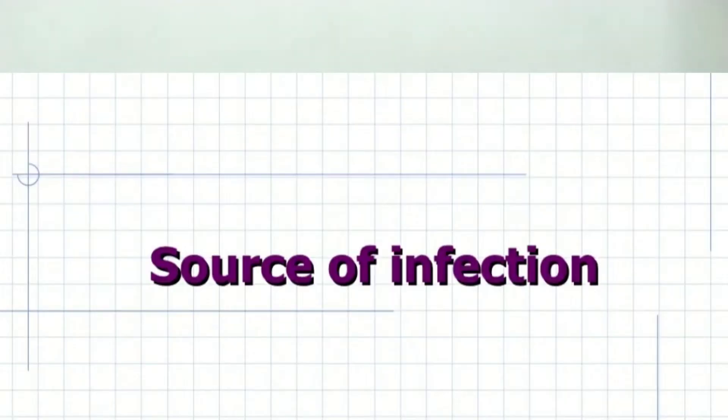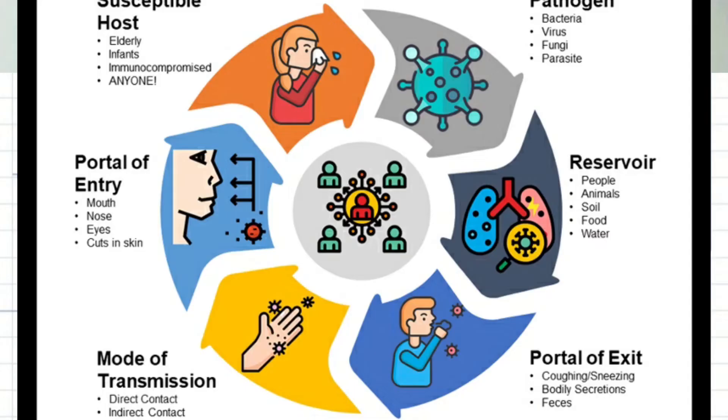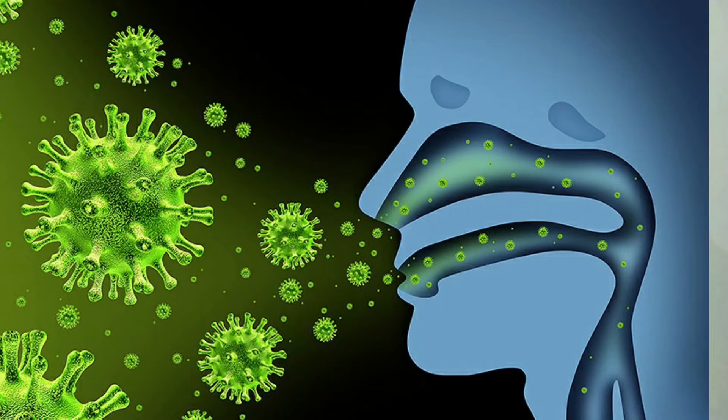So in this discussion on pathogenesis, we are going to cover: first, the source of infection; second, the mode of transmission — that is, how it spreads from one person to another; third, risk factors; and fourth, the mode of action, which is very important.